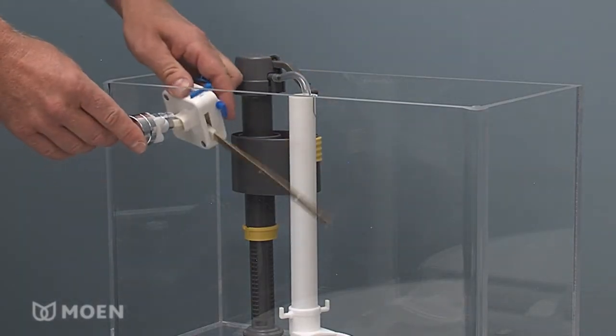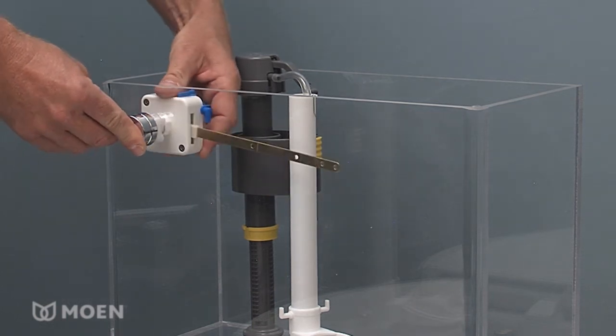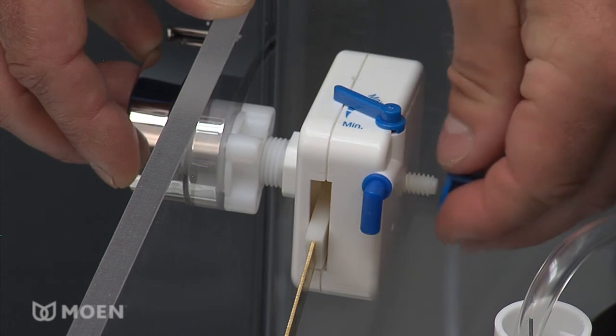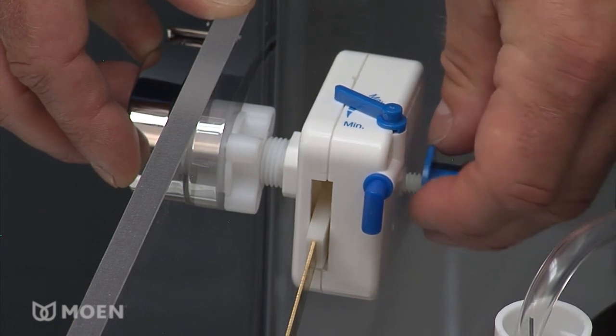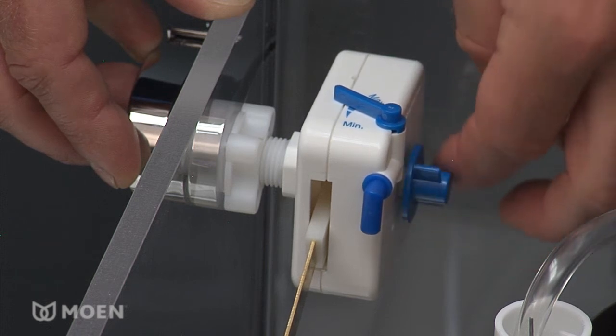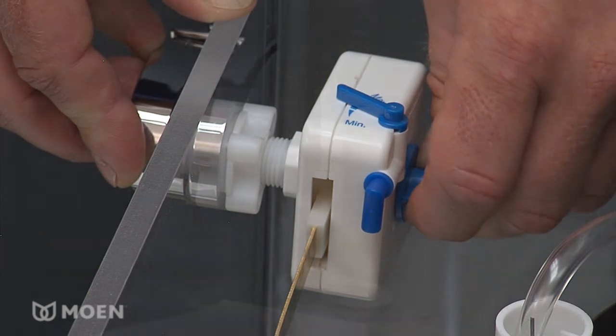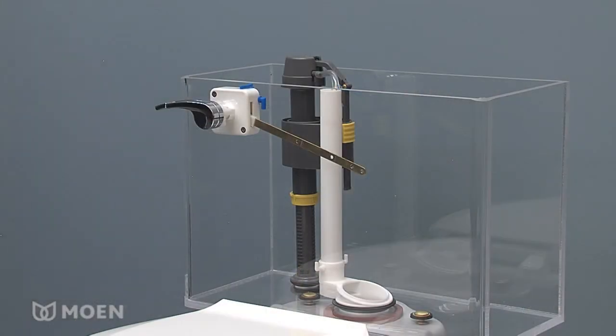Place the control box inside the toilet and line up the larger hole on the front with the lever shank. Ensure the blue min-max lever is on the right side of the top of the control box. Place the blue nut on the threaded lever shank at the back of the control box with the flat side towards the toilet tank wall and tighten. The assembled unit should look as shown.